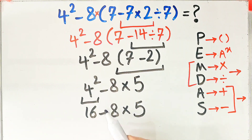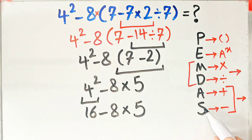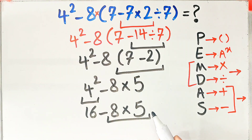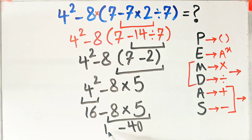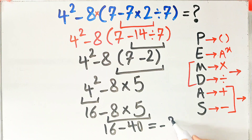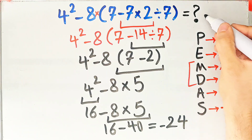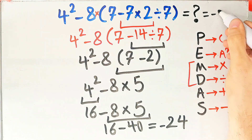Now we have subtraction and multiplication. First we simplify the multiplication because multiplication has higher priority than subtraction: eight times five equals forty. Now the question is sixteen minus forty, which equals negative twenty-four. The final answer of this question equals negative twenty-four.